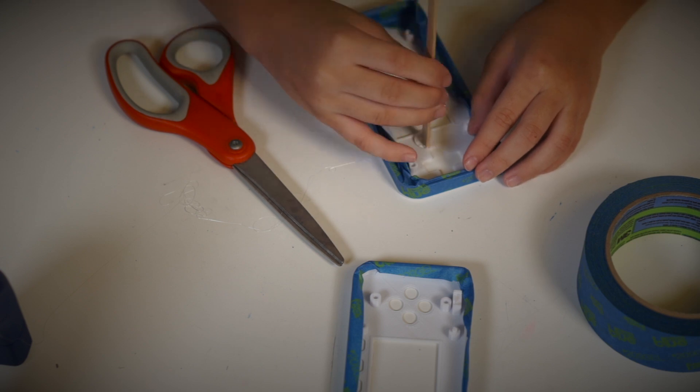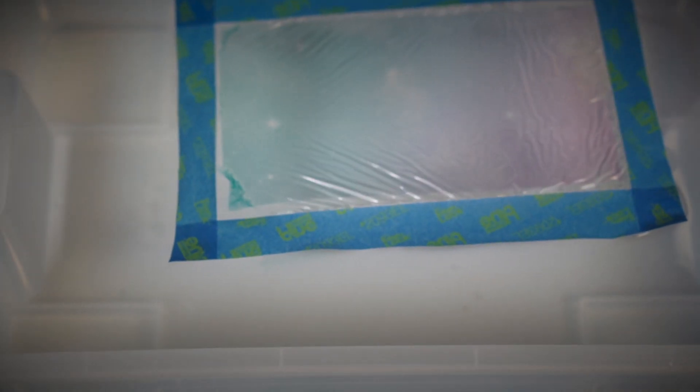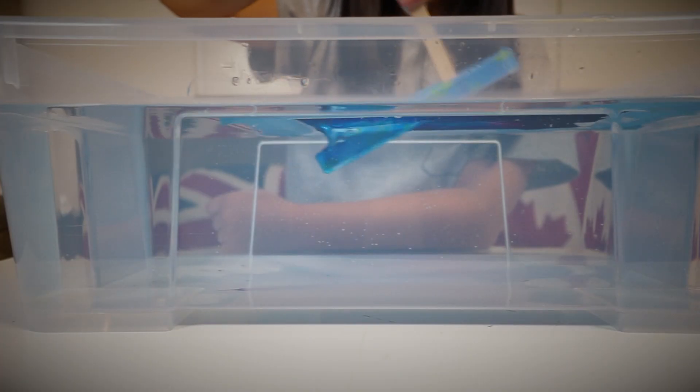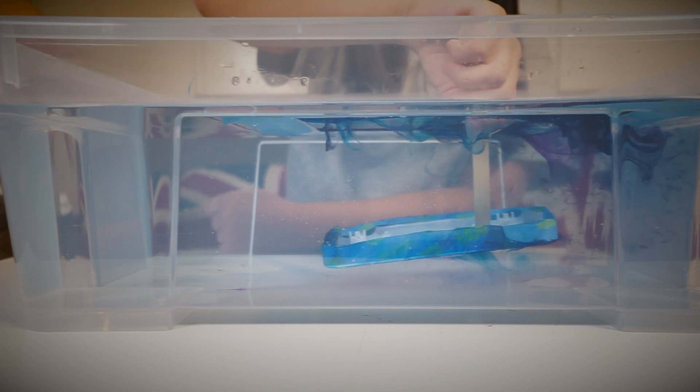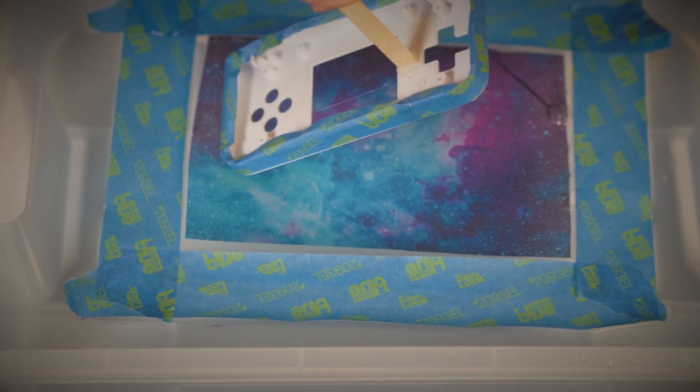Cut out the pattern and place it on the surface of the water in a tub that is big enough to fit the hydrographic part. Once the printout becomes smooth, it is time to dip. Make sure that the part goes in at a 45 degree angle to minimize bubbles. The pattern just sticks to the part. Then, just let it dry.